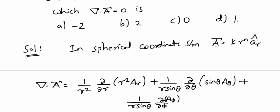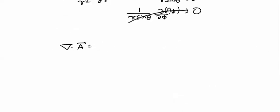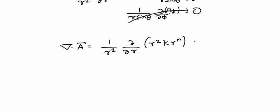Since vector A has only an r-component, there is no variation with respect to θ or φ. So the Aθ and Aφ terms become zero. Therefore ∇·A = (1/r²)(d/dr)(r²·Ar). Substituting Ar = k·r^n, we get (1/r²)(d/dr)(k·r^(n+2)) = 0.